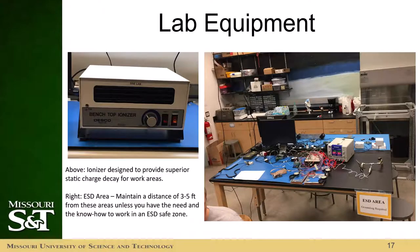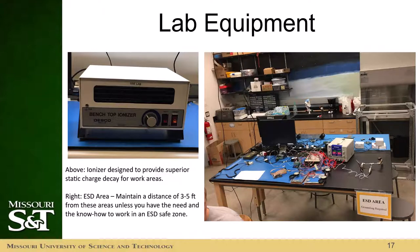We provide lab equipment to make ESD mitigation easier. On the left is an air ionizer, which is designed to ionize the air and allow charges to dissipate more easily. On the right are ESD areas, which can generally be identified by the blue mats — you might even see the ionizer on the table. If you don't need to be in a certain area, staying away from it is the best way to avoid an accidental ESD event.